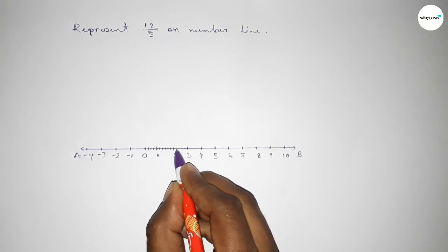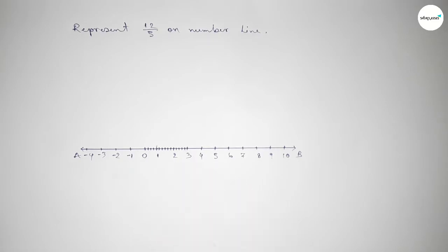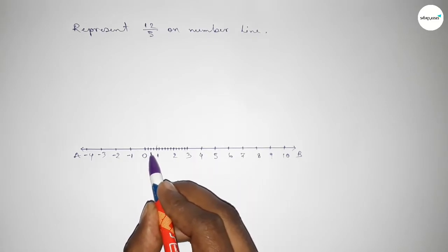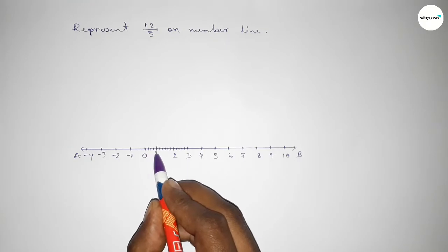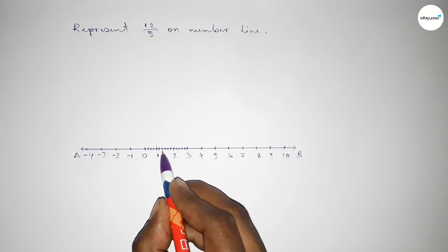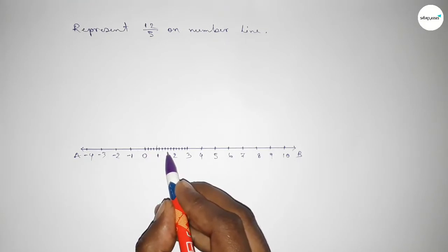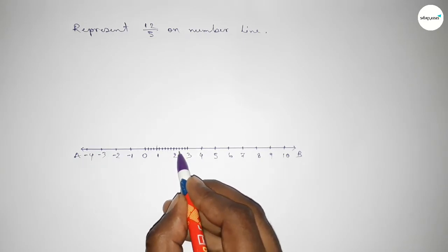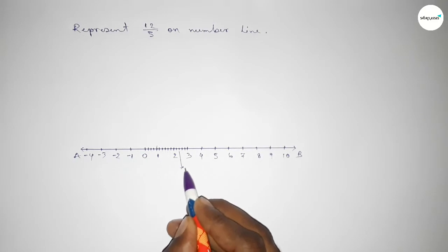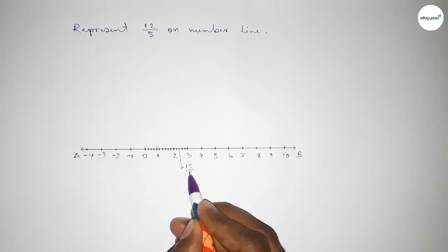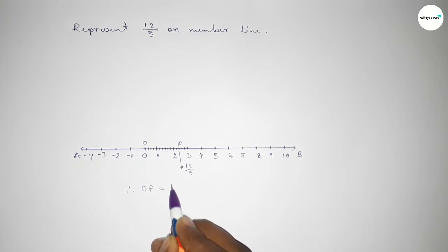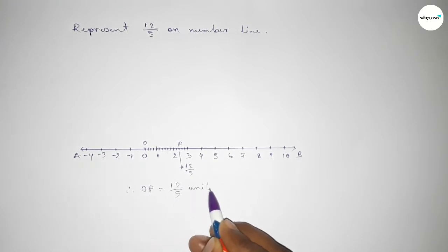Now mark the numbers with deep color to understand perfectly. This is one over five, two over five, three over five, four over five, five over five, six over five, seven over five, eight over five, nine over five, ten over five, eleven over five — so this is twelve over five on the number line. Therefore, OP equals twelve over five units.